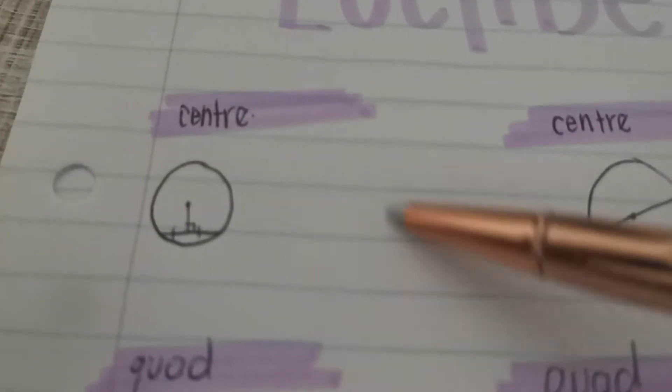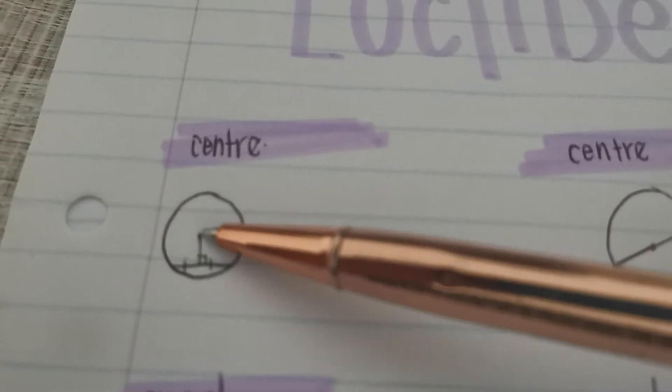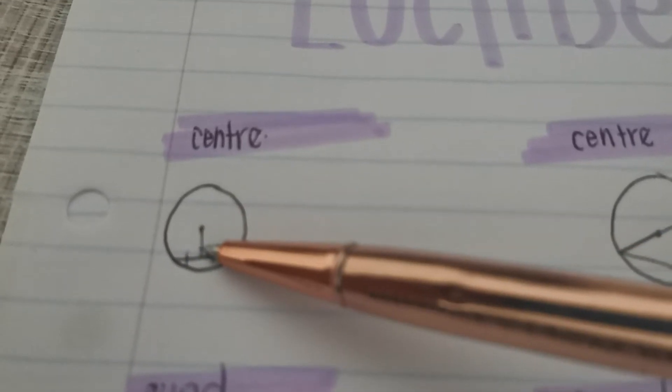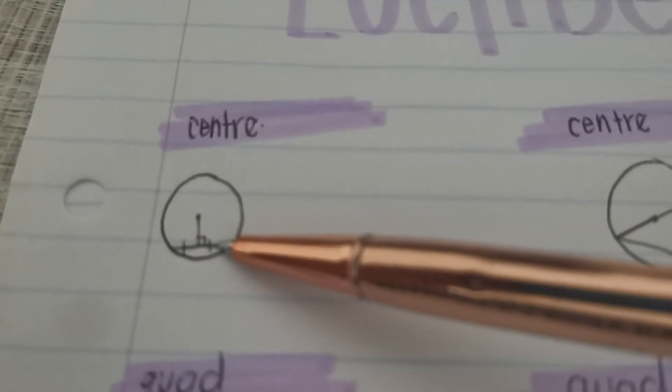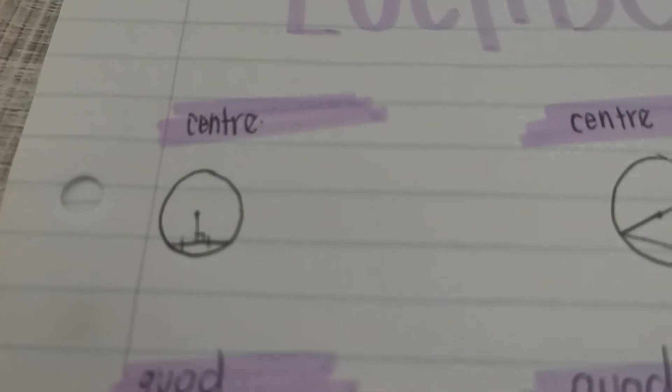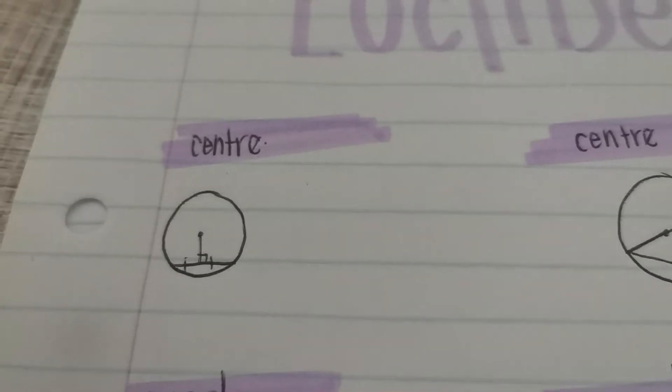So for the center one, quick recap, it's theorem one, where it's talking about line drawn from the center either drawn perpendicularly, bisects the chord, or if it was drawn from the center to the middle of the chord, it means it's perpendicular. That's the first one.